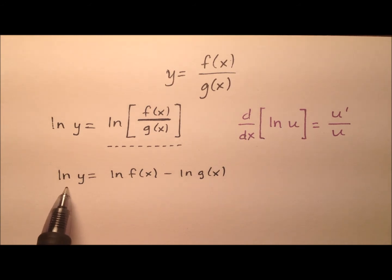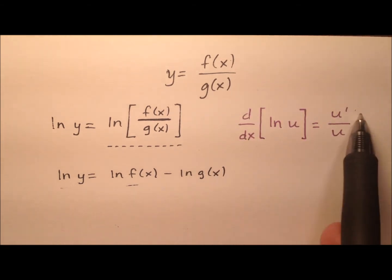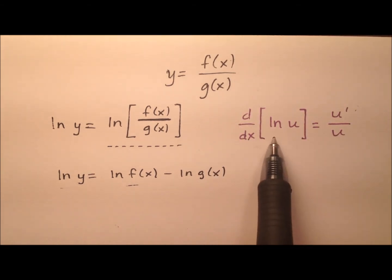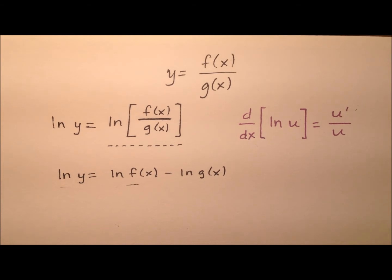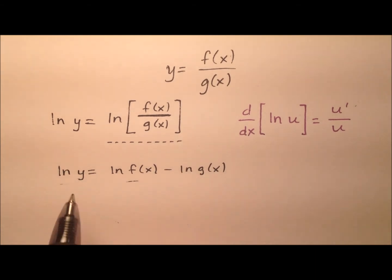So this is really nice because now I have three very distinct terms, all of which are natural logs. So if the next step is to go ahead and differentiate both sides of this equation, I can do so by using this log rule, which says the derivative of the natural log of some function u is going to be u prime over u. So I'm just going to go ahead and use this three times.